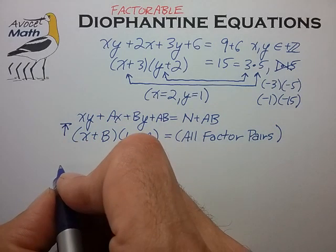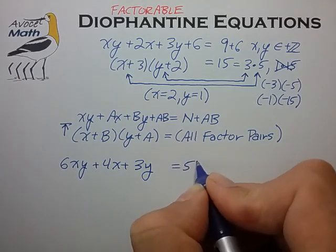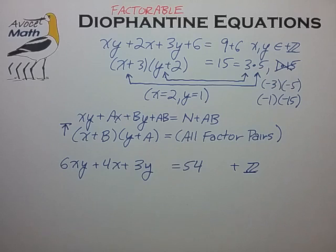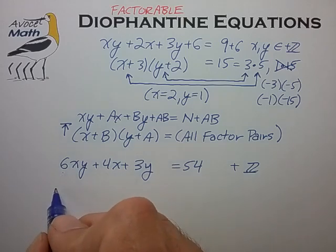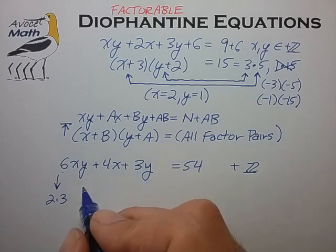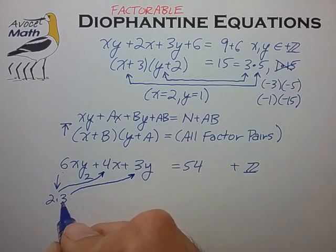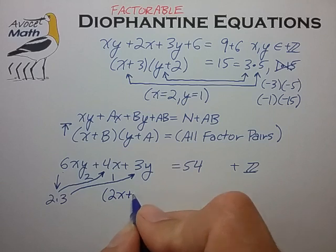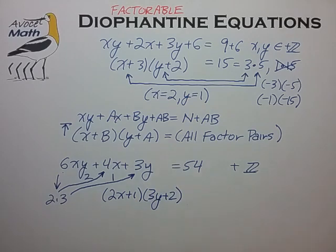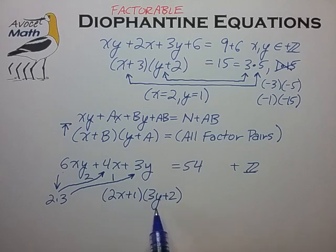As an example, what if we had the equation 6xy plus 4x plus 3y is equal to 54, and again we're trying to solve for x and y in the set of positive integers. There's actually a general equation for trying to factor this, but it's not terribly useful. A better approach is to consider the factor pairs of 6, one of which is 2 times 3, and look for how you can generate the coefficients 4 and 3. The 4 would be generated by taking the factor 2 and multiplying it by 2, and the 3 by taking the factor 3 and multiplying it by 1. This leads to the factor pair 2x plus 1 times 3y plus 2, with a constant term of 1 times 2 needing to be added to both sides.